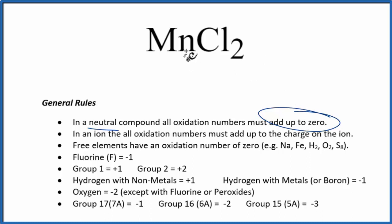We don't know what the oxidation number for manganese is. It can have different oxidation states. But we do know chlorine, that's in group 17, sometimes called 7A, has a negative 1 oxidation number. So we can use this information and the fact that all the oxidation numbers will add up to zero in this neutral compound to find the oxidation number for Mn.